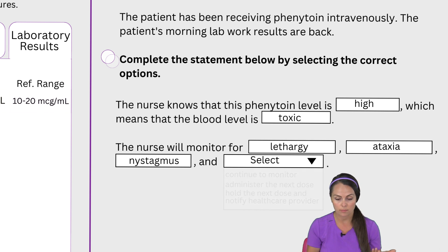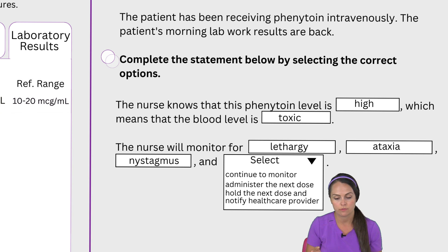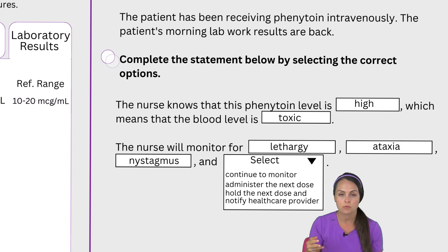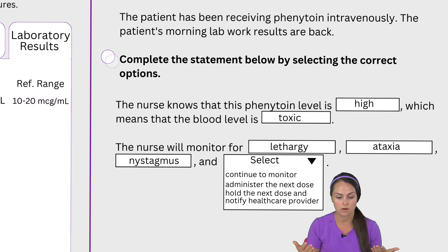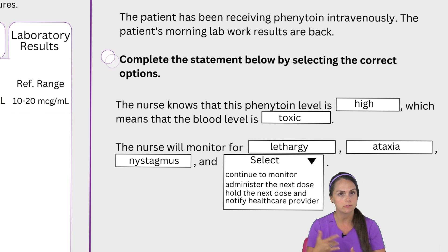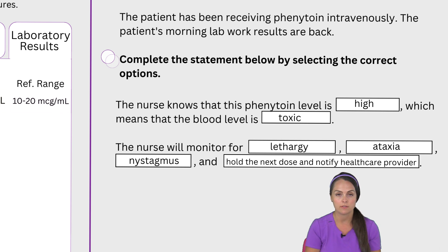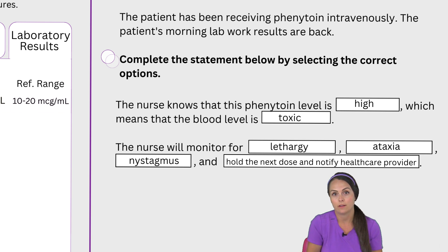To wrap up this statement we have one last drop-down box asking what we are going to do for this patient — we've established the level is high and toxic, and those are the toxic signs and symptoms that can happen when the level trends upward. Are we going to continue to monitor? We're always going to monitor, but that may not be the best answer. Administer the next dose? No, because we don't want to add more phenytoin which would push the level even higher. Hold the next dose and notify the healthcare provider — that's the best option. We need to notify the provider, let them know the level, potentially decrease the dosage, and get an order to hold it so we're covered as a nurse.